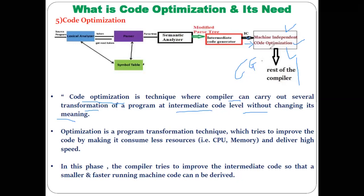The need for code optimization is that it is a program transformation technique which tries to improve the code by making it consume fewer resources and deliver higher performance. The first main reason is to make the program run faster. The second important reason is to make the program require less memory. For these two reasons we perform code optimization.